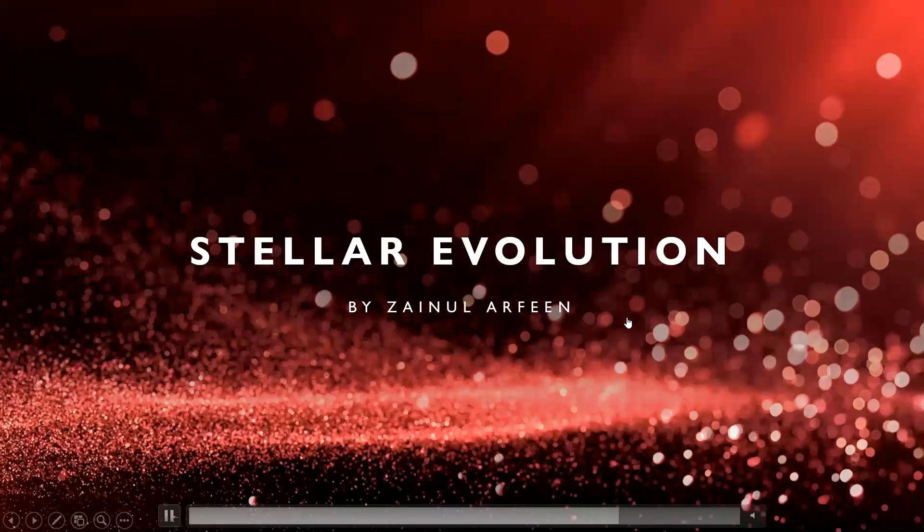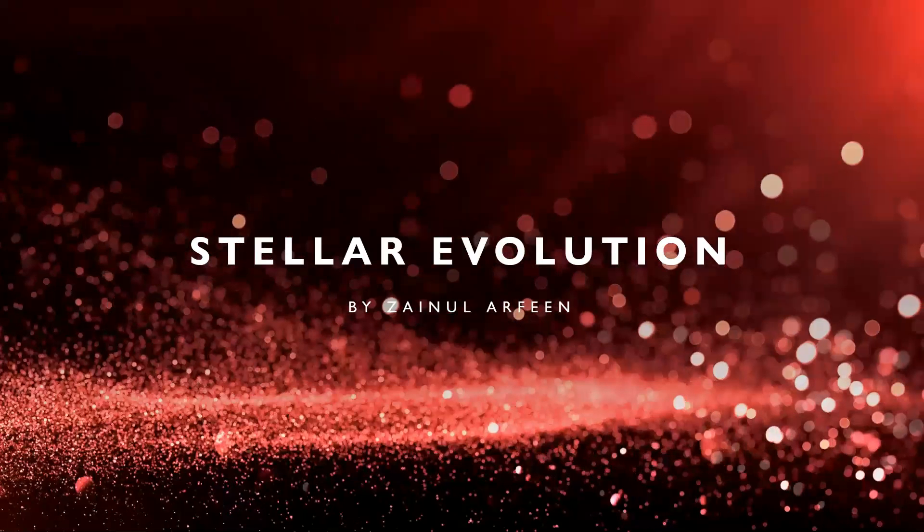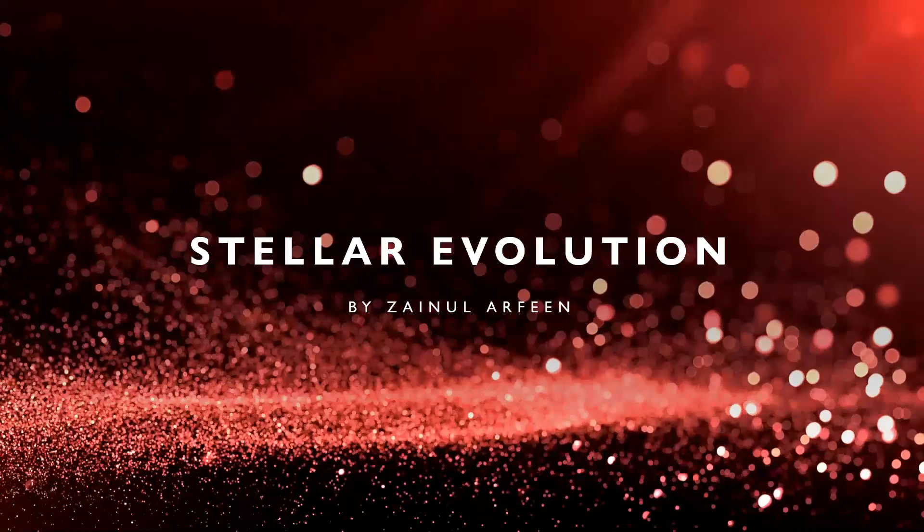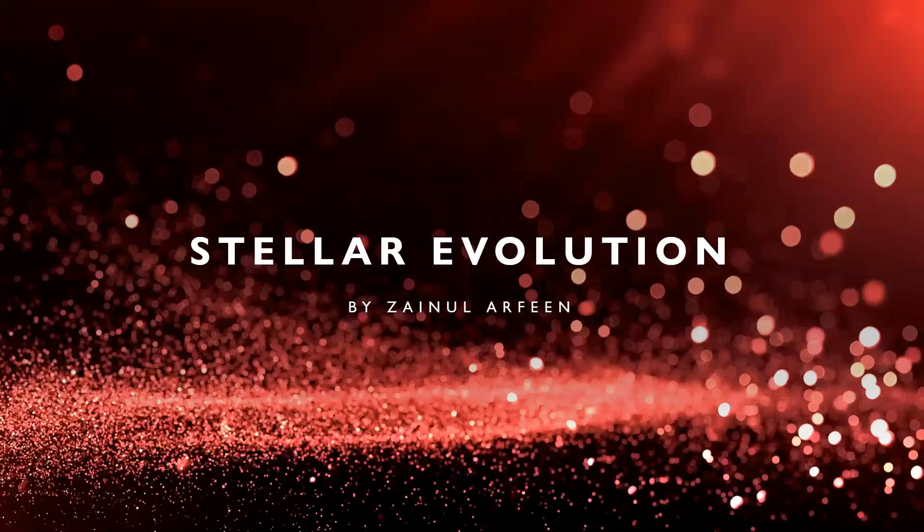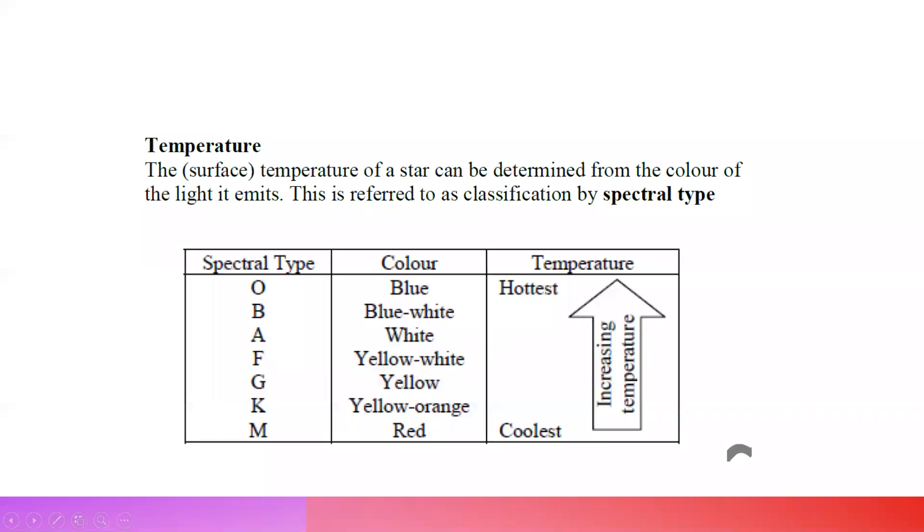Stellar evolution is mainly the cycles of stars, how stars are formed, and what sequence these stars follow when they move from main sequence to different types of stars. First, we can categorize stars in terms of temperature. The surface temperature of a star can be used to determine the color of light which it is emitting. If it's a very hot star, it tends to emit light in the blue region. When it's a cold star, it emits light in the red region.